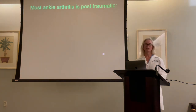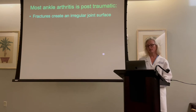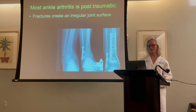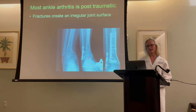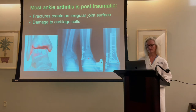Most ankle arthritis is post-traumatic. Fractures or broken bones can create an irregular joint surface that rubs unevenly and wears away cartilage. Here is an example of a fracture, and you can see where all the little breaks are. Even though we try to fix it perfectly, we can't make it exactly perfect, and there's a high incidence of going on to ankle arthritis — because cartilage cells, not only bones, are damaged with this type of fracture.